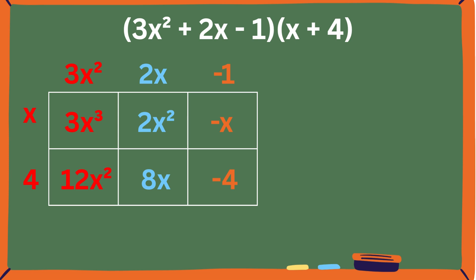Negative 1 times 4 equals negative 4. That's a lot of boxes to fill, but it's definitely less confusing and more organized than the distribution method. Once you add all the like terms together, you get 3x cubed plus 14x squared plus 7x minus 4.